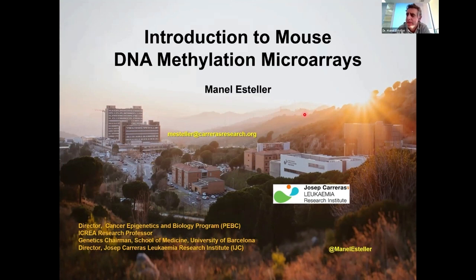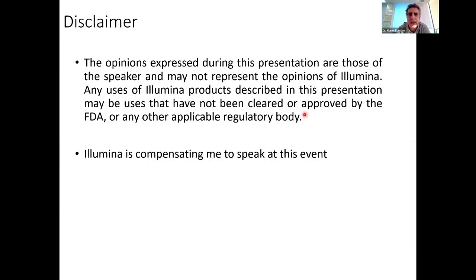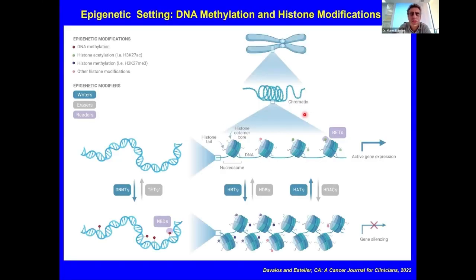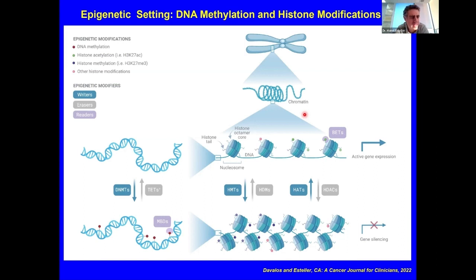This array is really interrogating the methylated cytosine that precedes the guanine, although some of the sites in the mouse array also include CNG sites. This is a critical mark that really determines the identity of cells, and what goes wrong in different diseases, among these in cancer.